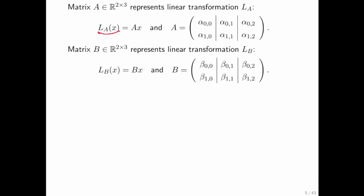We know that LA is a linear transformation. So we know that LA of x is the same as A times x. And we know that there's some matrix associated with this. Same thing for B.